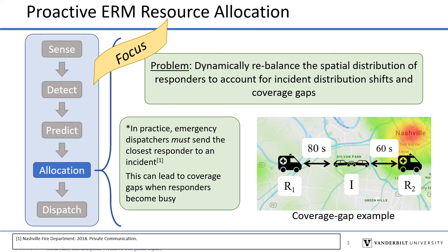The figure in the lower right demonstrates how a coverage gap can occur. Responder R2 is dispatched to incident I since it is the nearest, but this leaves no responder near downtown Nashville, an incident hotspot. The idea is to move the available responders, like R1, to account for this gap while R2 is busy. It's important to note that in practice, dispatchers usually must send the closest responder to an incident due to legal constraints, which can lead to gaps like in this example.